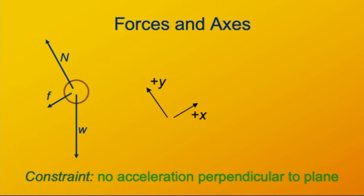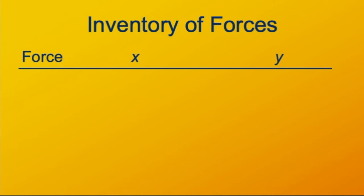The coordinates are doubly convenient here because of the constraint: there's no acceleration perpendicular to the plane, though there can be acceleration parallel to the plane. This is ideally suited for inclined coordinates — we can say the y component of the net force is zero, and the x component is what we're trying to find. Our friction force is still parallel to the surface, but now it's acting downhill because the box is sliding uphill. If the box were sliding downhill, friction would be uphill. Making our force inventory table, all we know for certain about the net force is that its y component is zero; the x component we can't fill in yet.